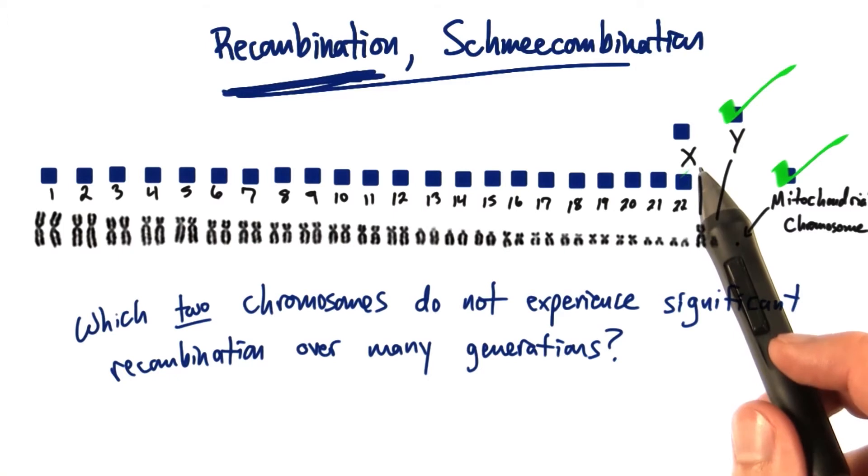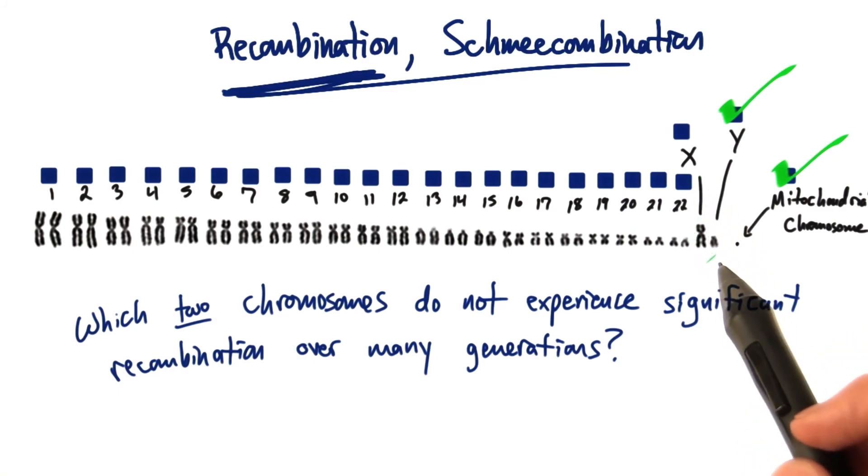Whereas the X has plenty of recombination that goes on when it finds itself in combination with another X. And of course, the mitochondrial chromosome doesn't undergo recombination at all.